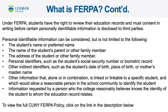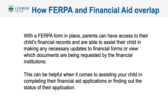Personally identifiable information can be considered but is not limited to the items listed on this slide, such as the student's name, address, and social security number. With a FERPA form in place, parents and guardians can have access to their dependent's financial records and are able to assist them in making any necessary updates to financial forms or view which documents are being requested by financial institutions. In summary, FERPA guidelines give students the right to keep their personal and academic information confidentially. For a parent, guardian, or third party to access any of these items, consent must first be provided by the student via the completion of a FERPA release form.